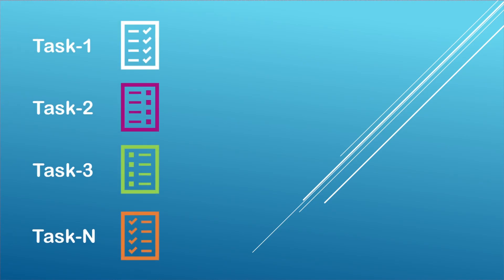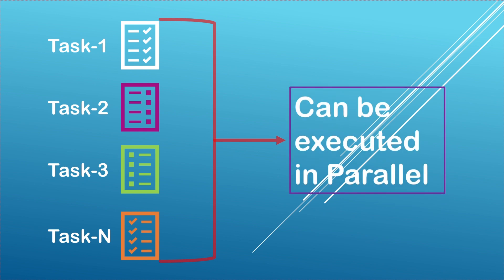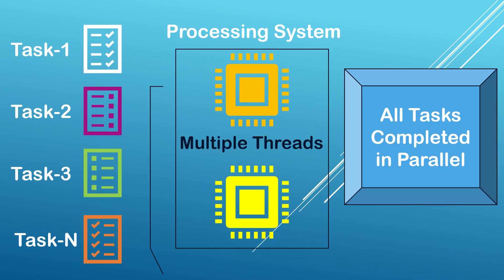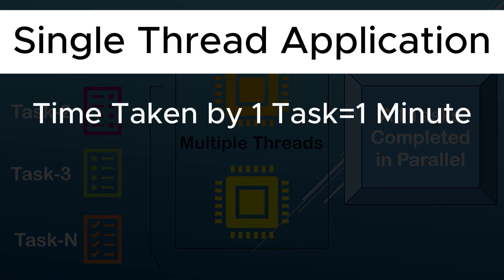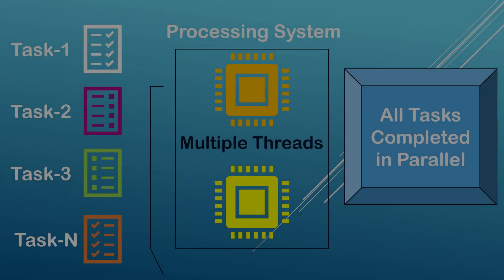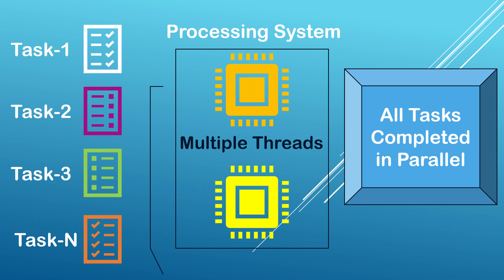Suppose we have many tasks which can be executed in parallel and we want to finish all those tasks as quickly as possible. We can use multiple threads and let those tasks execute in parallel — this will drastically reduce the overall time taken. If completing one task takes around one minute and we are using a single-threaded application, then completing 10 tasks will take around 10 minutes, because a single thread executes one task at a time. But if we create 10 different threads and every thread handles a single task running in parallel, then the total time taken will be around one minute only.